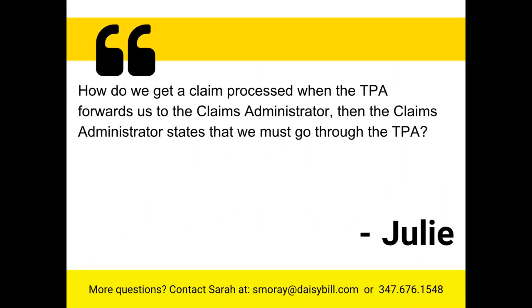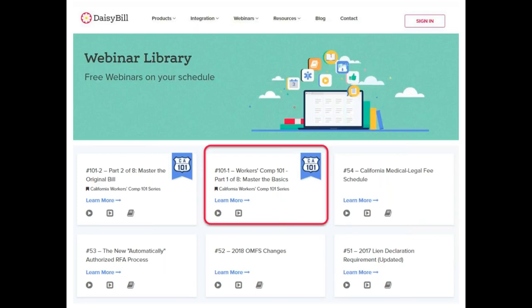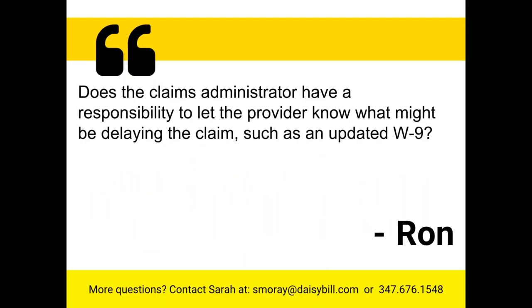Julie asks: how do we get a claim processed when the TPA forwards us to the claims administrator, and the claims administrator states that we must go through the TPA? The TPA is the claims administrator. Both self-insured employers and insurers hire third-party administrators to act as their claims administrators. In our first webinar, Master the Basics, we cover all of the roles and their associated responsibilities.